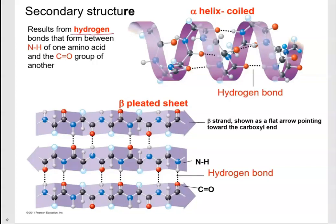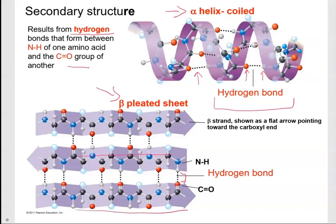Secondary structure results from hydrogen bonds that form between the amino group of one amino acid and the carboxyl group of another. This produces an alpha helix — a coiled structure — or beta pleated sheets. In the alpha helix, hydrogen bonds form between oxygen and hydrogen. In the beta pleated sheet, you have rows of amino acids folding in a different way, with hydrogen bonds between oxygen and hydrogen creating that partially positive and partially negative attraction.